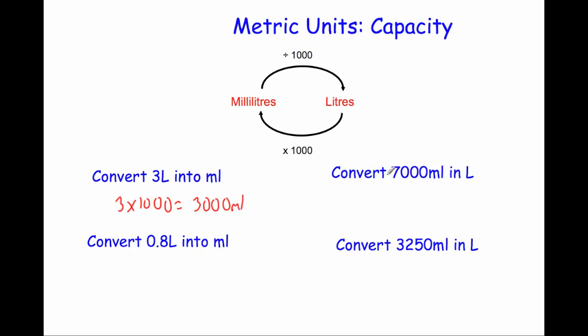Our next question. Change 7000 millilitres into litres. To change from millilitres into litres we divide by 1000. So 7000 divided by 1000 equals 7. So the answer would be 7 litres and that makes sense because if one litre is 1000 millilitres, 7000 millilitres would be 7 litres.